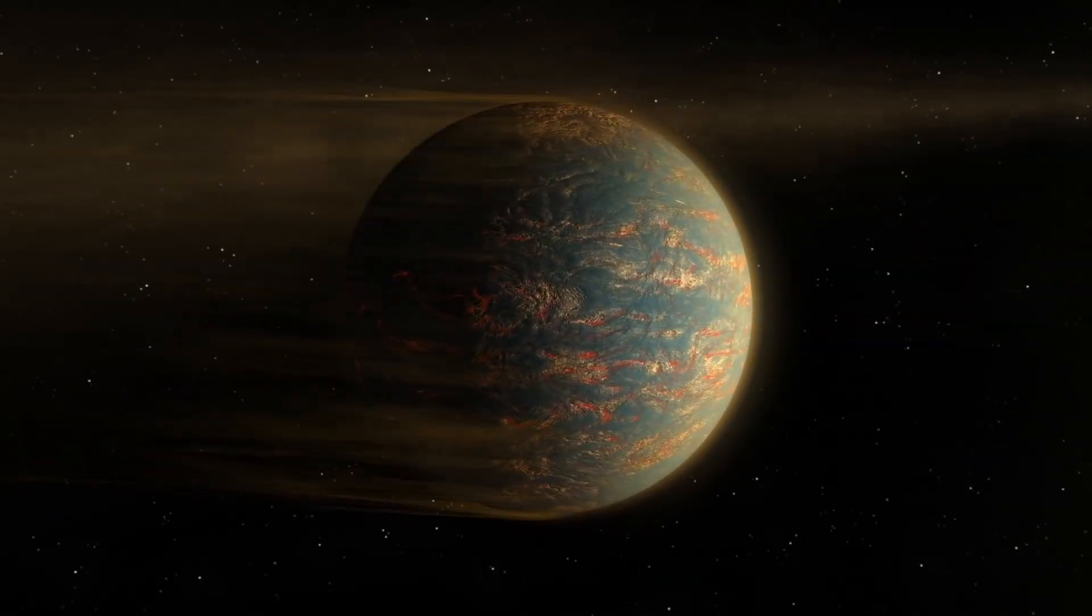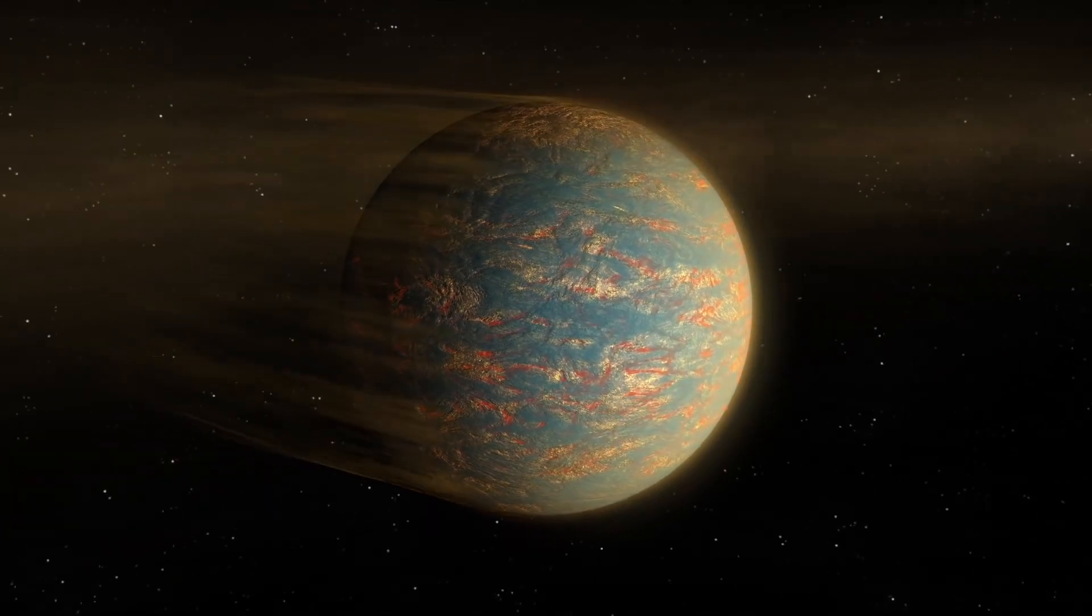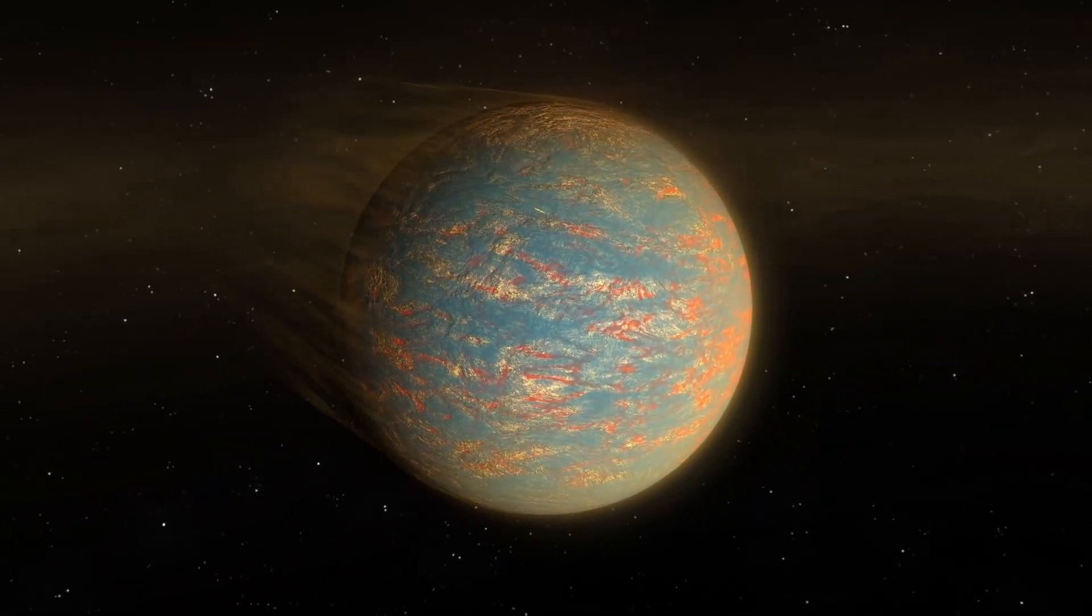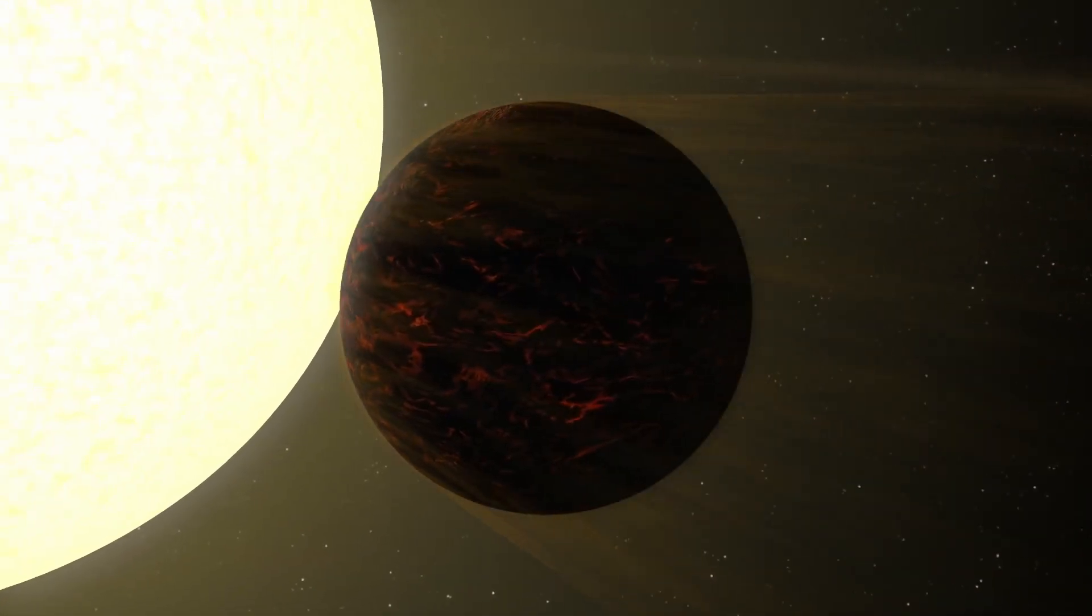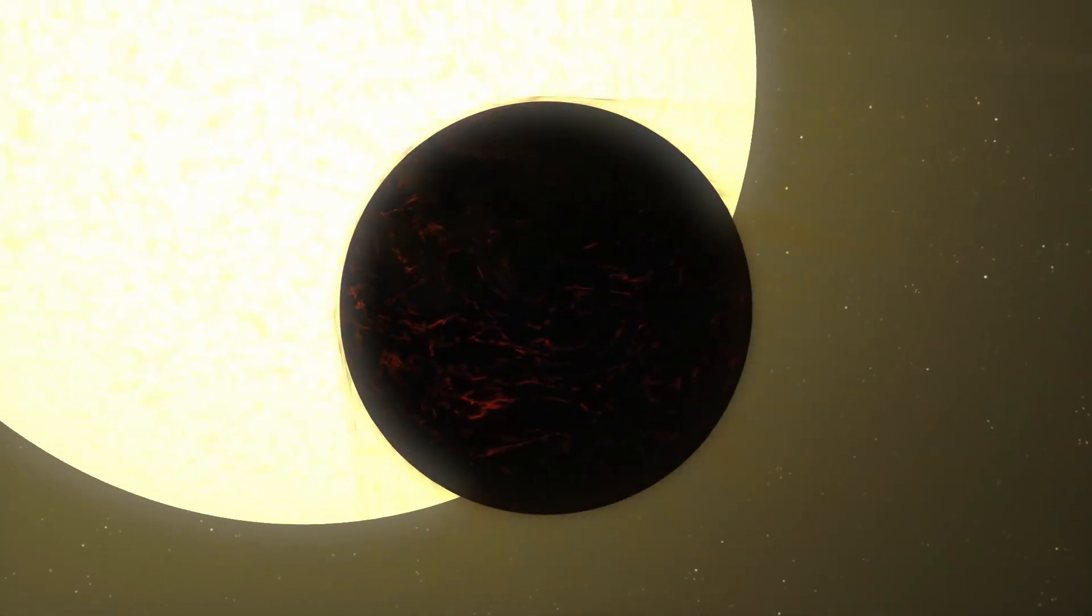But the planet is uninhabitable. Here temperature is 2,700 degrees Celsius because the planet is orbiting its host star very closely.